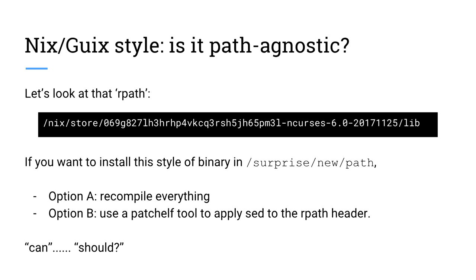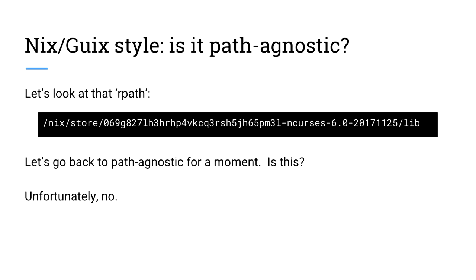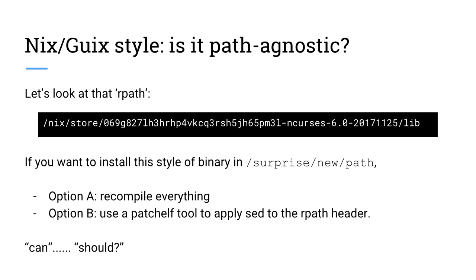Some people say that Nix can in fact be installed in any path, and that's sort of true. Can-vs-should questions come up here a lot. These paths, as we saw, are literally embedded in the binaries. So if you're going to install one of these binaries from Nix in a different prefix path — if you're going to try to make it path agnostic — you basically have to rewrite this header, either by recompiling the whole thing or by using some tool that patches headers. So this is not path agnostic.